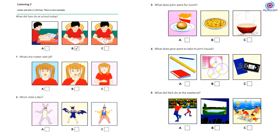2. Which child is Ben? Look at this photo of my birthday party. Can you find me? Oh, Ben, that's difficult. You're all wearing party clothes. Are you the bat? No, that's my friend John. Are you the clown, then? Yes, I am. And this rabbit is my sister.